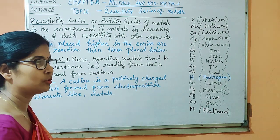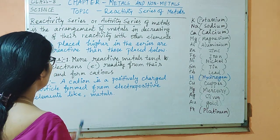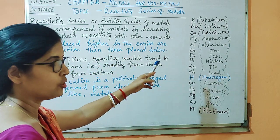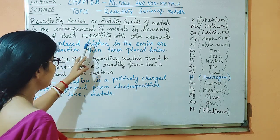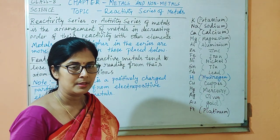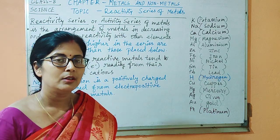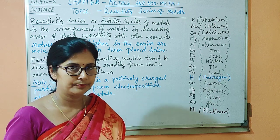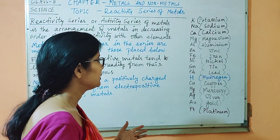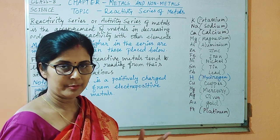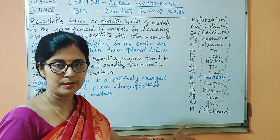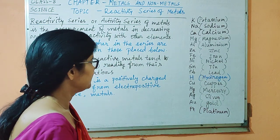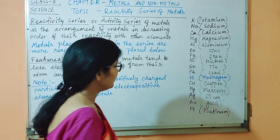The reactivity series, which is also known as the activity series, is the arrangement of metals in the descending order or decreasing order of their reactivity with other elements. Metals react with oxygen in air, water, or dilute acids. The reactivity series arranges different metals according to their decreasing order of reactivity. Here we have written a few names which are mostly in use.